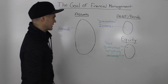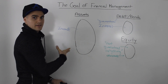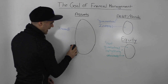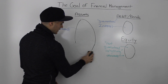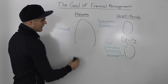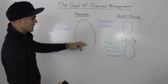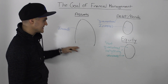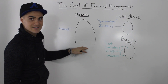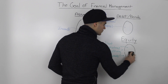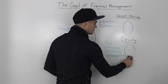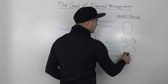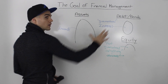Now let's consider the opposite case. Let's say your company starts losing money. So instead of the assets growing, the assets start shrinking. We have less assets on the left side, and the guys that take the loss of these assets shrinking first are the equity holders. So the equity holders' piece of the pie would decrease as well, and notice how both sides are still balancing.